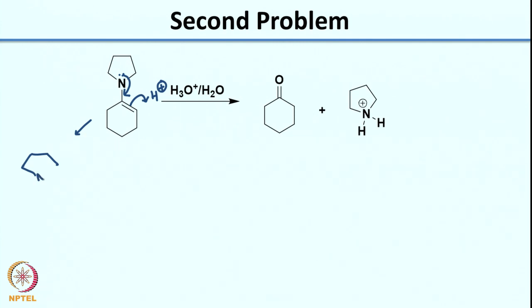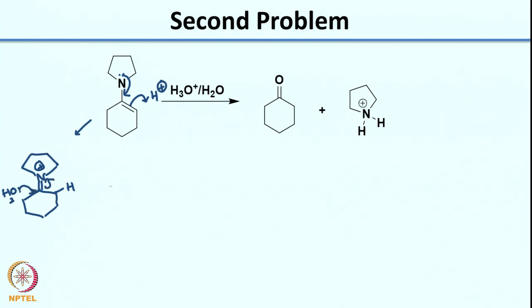The species that I generate from this step — once I generate this species, the next step would be reaction with water. Let us look at the electrophilic centers or sinks in this molecule. Water can react at this carbon center, and what you would end up generating would be the tetrahedral intermediate.